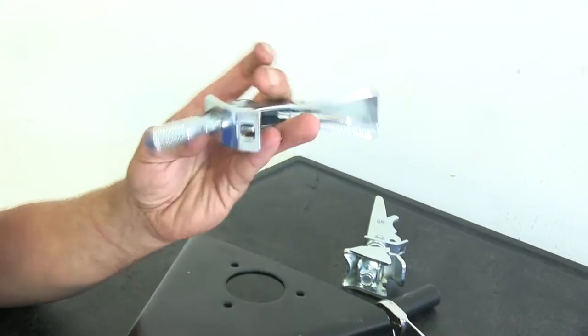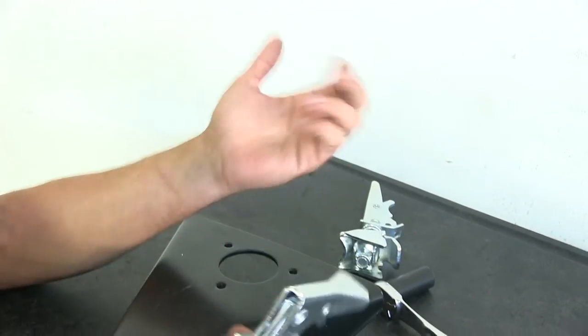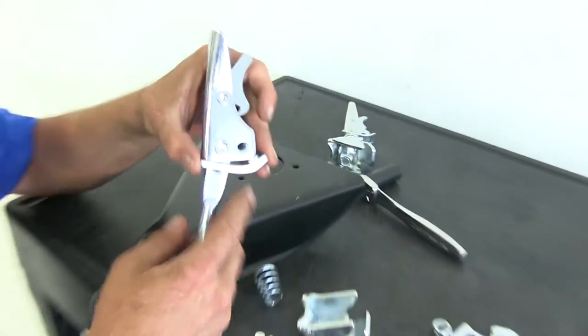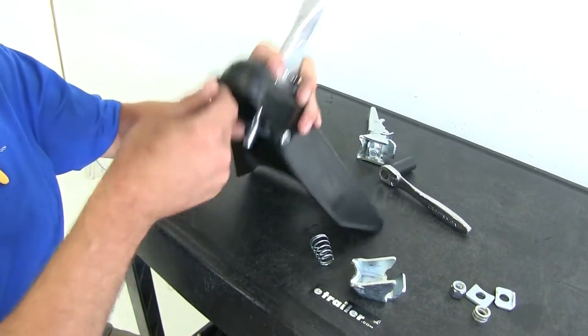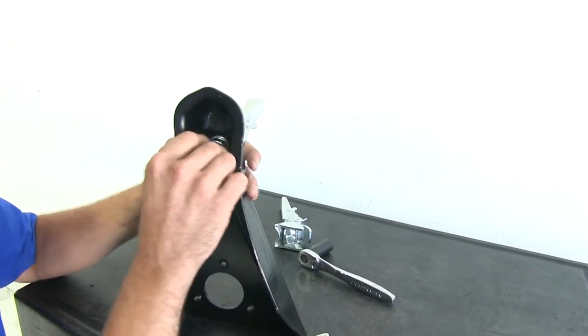Spring comes off, and then we'll be pulling this out. At that point, we'd grab our new one. We're going to fit this right back down through that bolt, and place our spring back on the bolt.